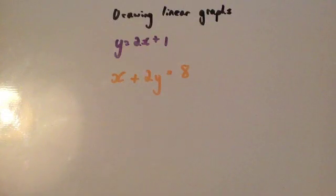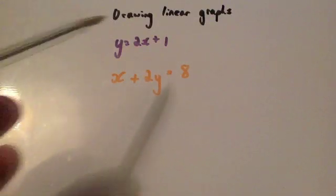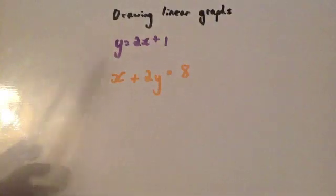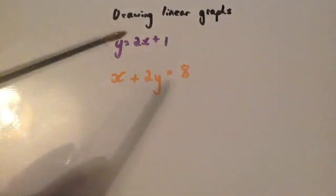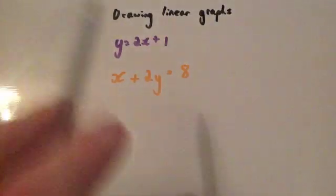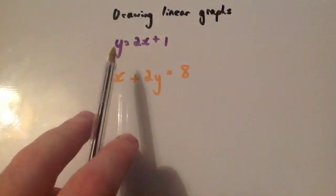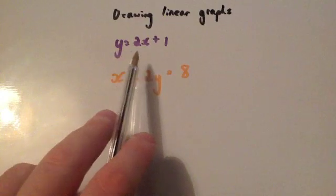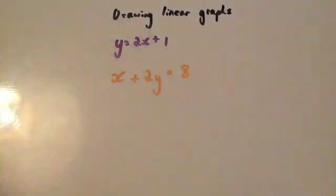In this video we're going to look at how to draw linear graphs. These are sometimes called straight line graphs and they come in different formats. The traditional format is something like y equals 2x plus 1.